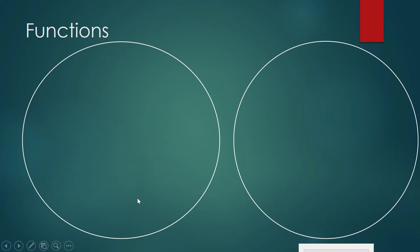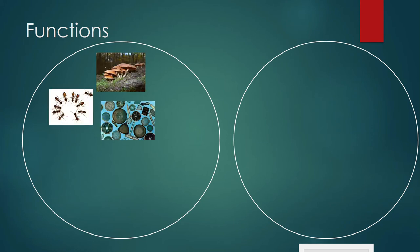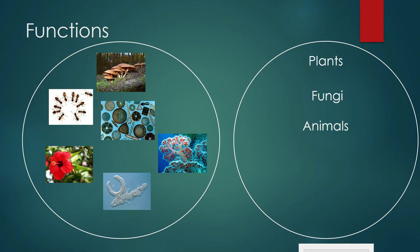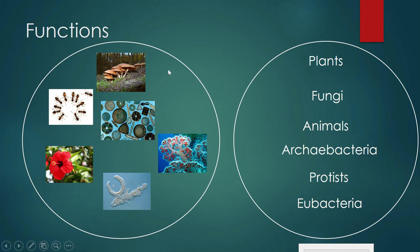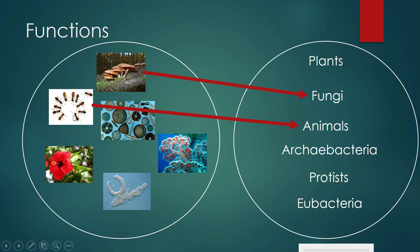Functions need not be only about numbers. Any kind of pairing wherein the definition of function is met would be an example of a function, and we see a lot of this in the field of biology. For example, in the classification of living things into kingdoms, we shall pair the elements in set A — the set of living things — with their corresponding kingdom in set B. That is your A cross B.